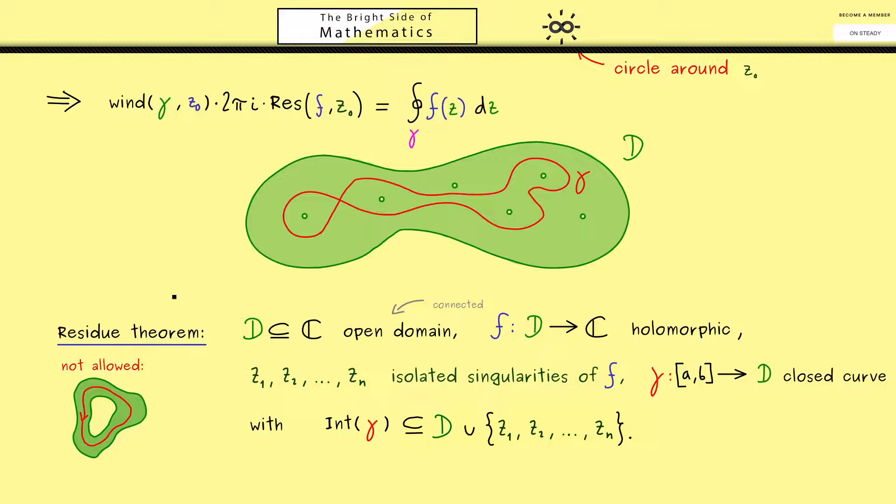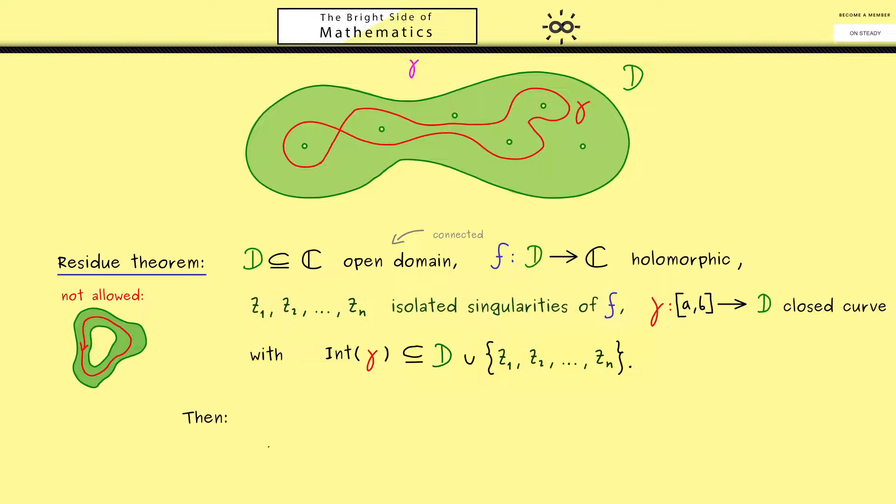Ok and now the statement of the residue theorem is simply the generalization of this statement from above. So this means we just have to sum over all isolated singularities. So more precisely this closed contour integral here is given by the sum where j goes from 1 to n and then we have the factor 2πi times the winding number around zj times the residue at zj.